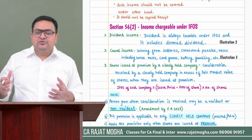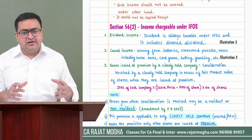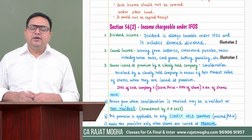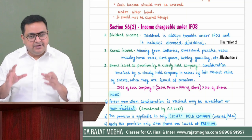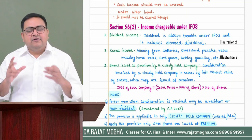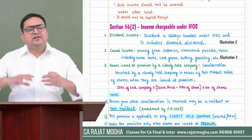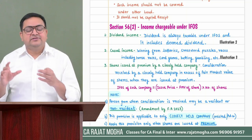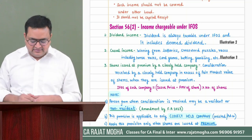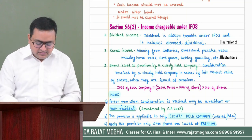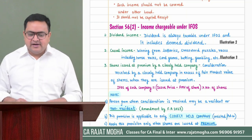Second is casual income — meaning winnings from lotteries, horse races, puzzles, etc. Online gaming is also covered here now. There is an amendment — Section 115BBJ has been inserted, which says 30% tax will be chargeable on online gaming income. Casual income will always be taxable under IFOS.